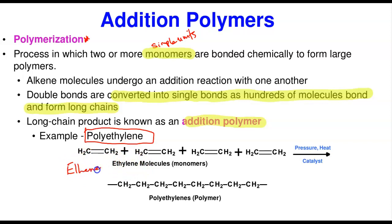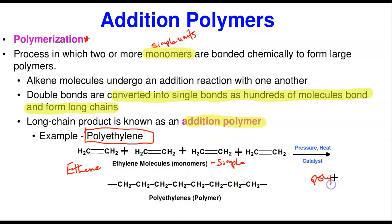A bunch of ethylene molecules — represented here by about four, but actually thousands — come together under intense pressure and heat, and the reaction is usually catalyzed by a catalyst. These ethylene molecules are the monomers because they are the simple units which combine together to form large molecules — the polymer. Ethylene combines to form polyethylene: 'poly' is a Greek word meaning many, so polyethylene means many ethylenes.